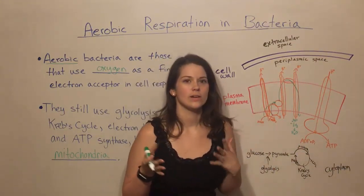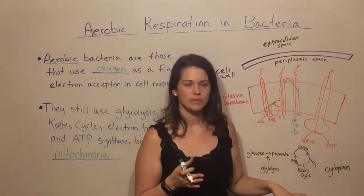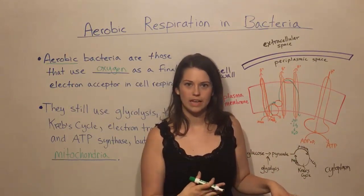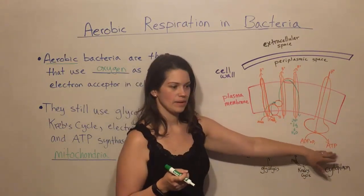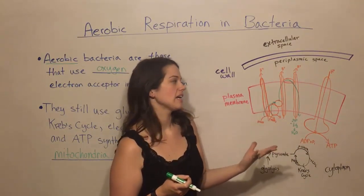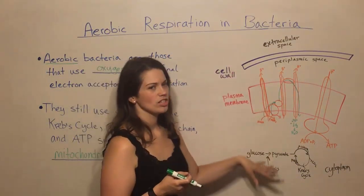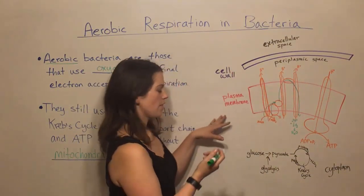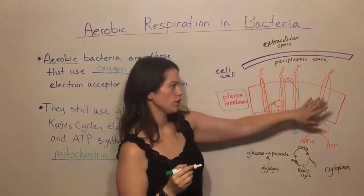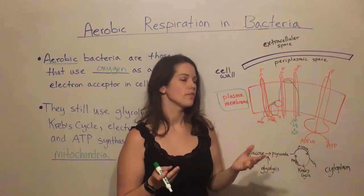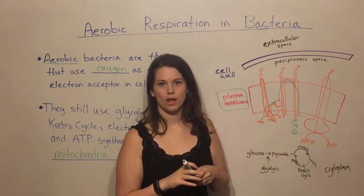Here we have the ATP synthase where ATP is being made. The main point of this video is to understand that these processes are quite similar to what's going on in human cells — breaking down glucose and harvesting the energy in those bonds to convert it into ATP. The key difference for aerobic respiration in bacteria is just the location: they use their plasma membrane to hold their electron transport chain and ATP synthase, rather than having a mitochondrion with an inner membrane.